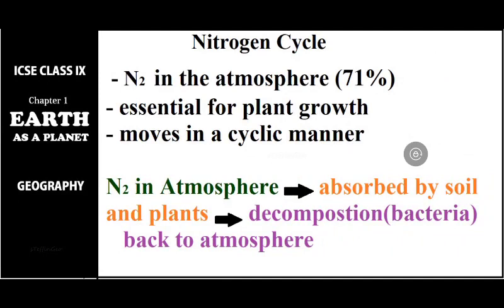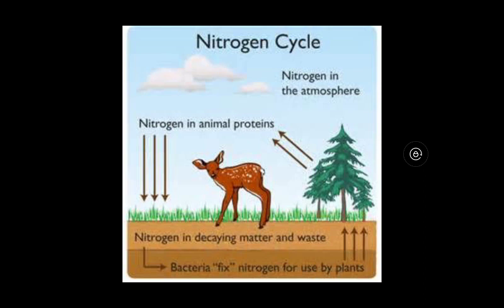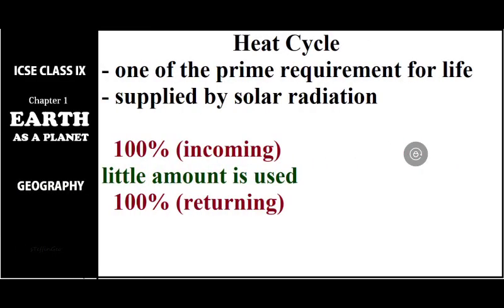Nitrogen makes up 78 percent of the gases in the atmosphere. Nitrogen is essential for the growth of plants and it moves in a cyclic manner — from the atmosphere it reaches plants and soil, and then goes back to the atmosphere. Nitrogen in the atmosphere is absorbed by soil and plants; after decomposition, the nitrogen is released back to the atmosphere. This cyclic movement of nitrogen is called the nitrogen cycle.